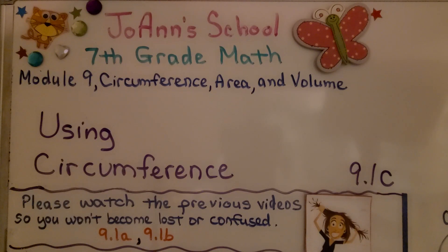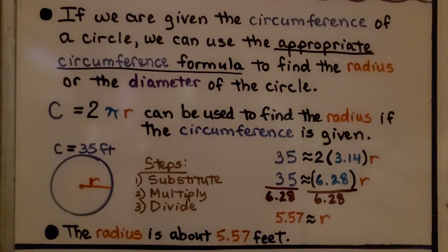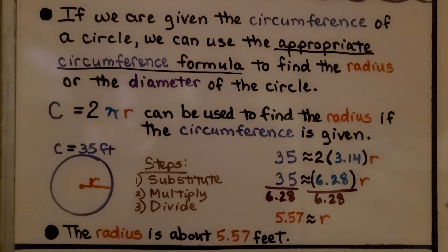Lesson 9.1c: Using Circumference. If we are given the circumference of a circle, we can use the appropriate circumference formula to find the radius or the diameter of the circle.